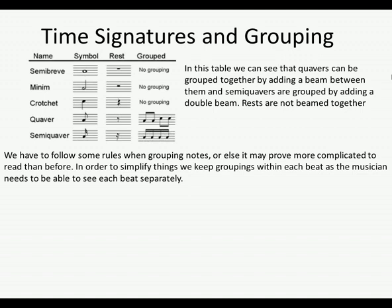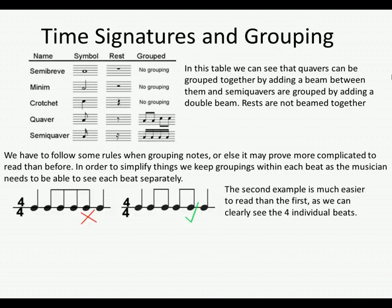We have to follow some rules when grouping notes, otherwise it may prove more complicated to read than before. In order to simplify things, we keep groupings within each beat, as the musician needs to be able to see each beat separately. If you look at the first example, it looks very difficult to read because the composer has grouped the second beat to the third beat, so we're not really able to see clearly that there are four beats in the bar. In the second example, you can see each beat clearly — four crotchet beats — and it's far easier to read.